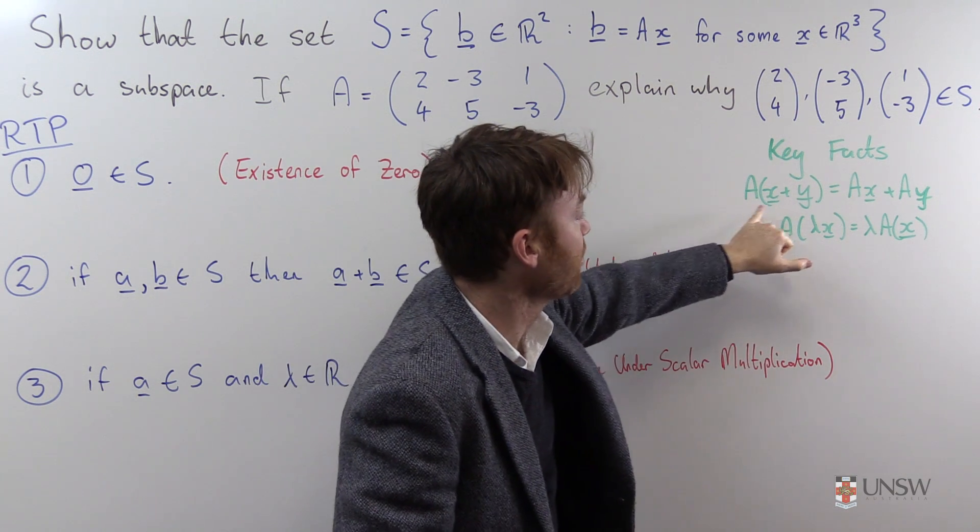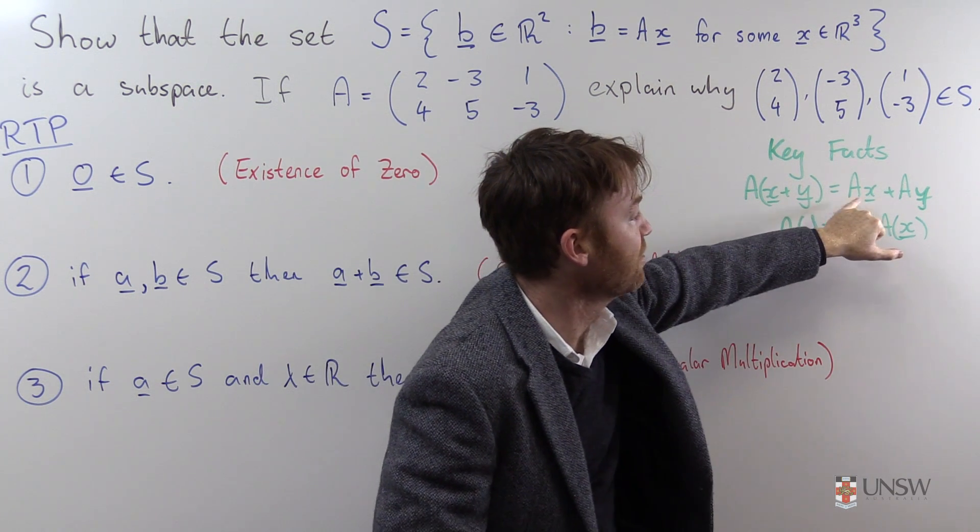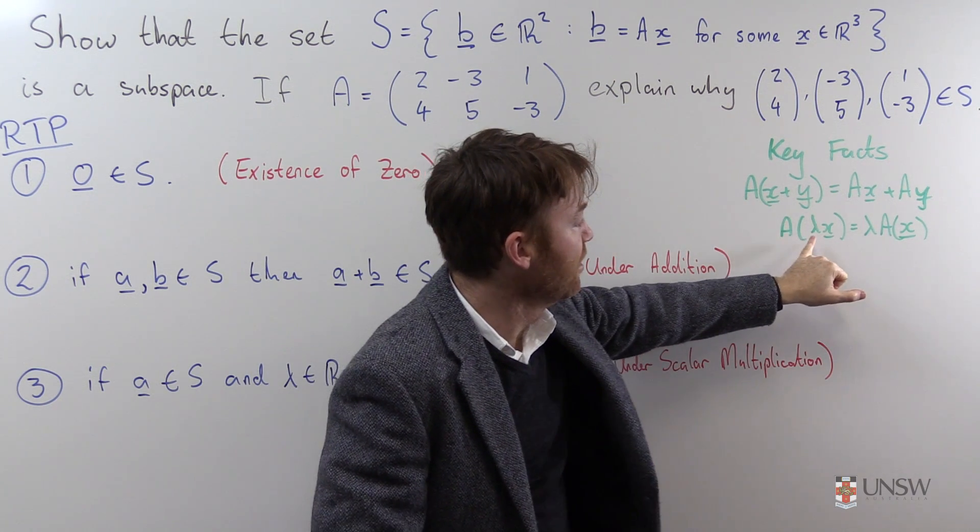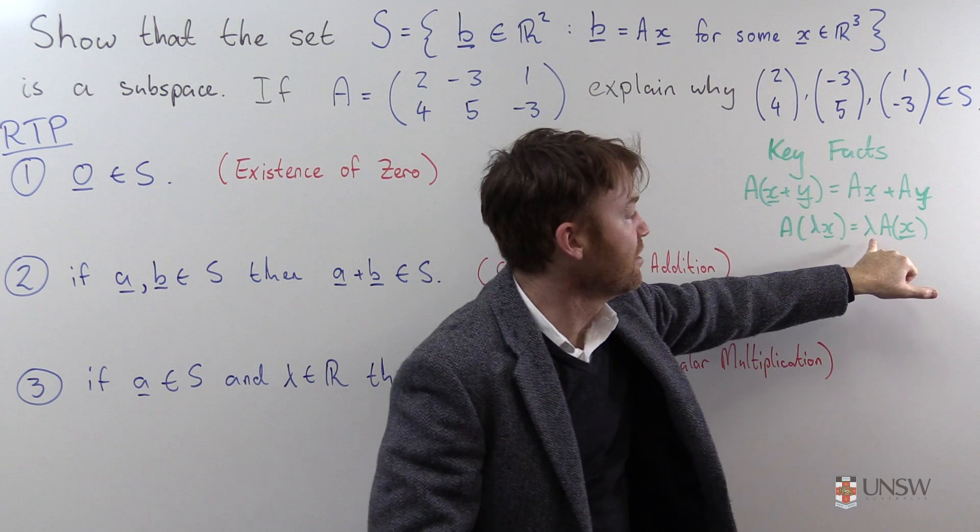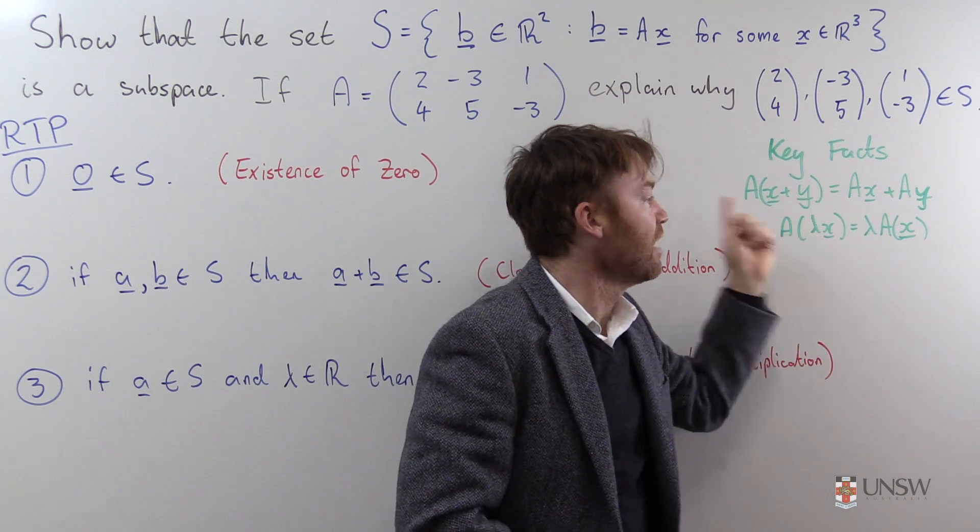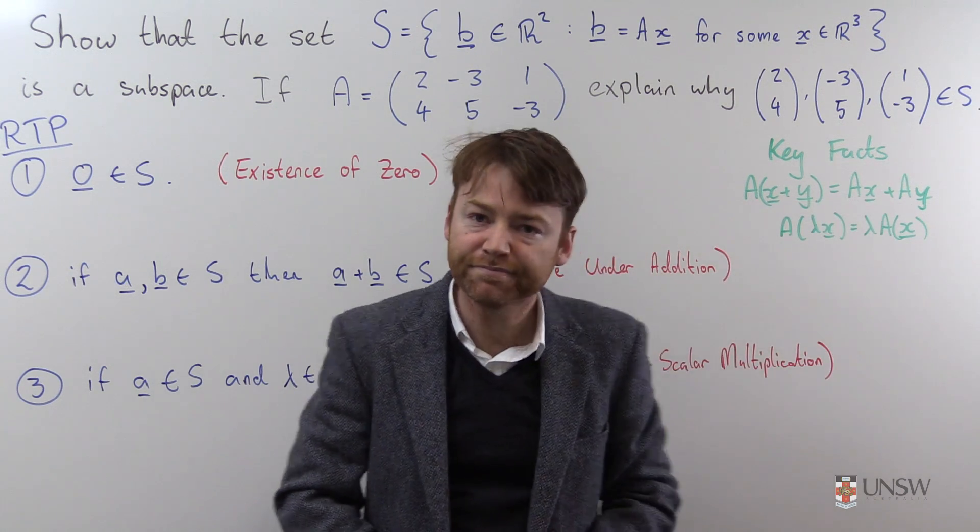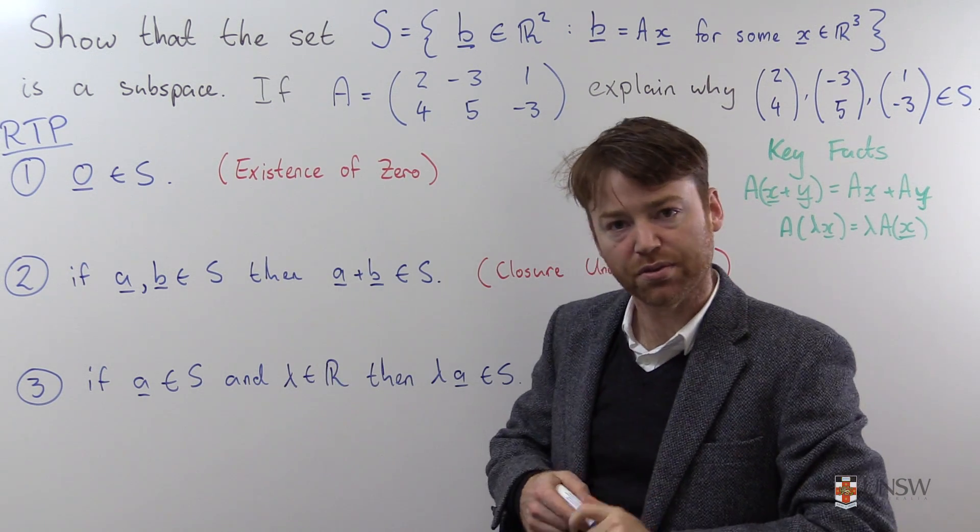In particular that A of a sum of two vectors is A to the first vector plus A to the second vector, and that A of lambda times the vector is lambda times Ax. So you can pull that lambda out the front if you like, and you can apply A to the sum component-wise. Those are the two facts we're going to use.